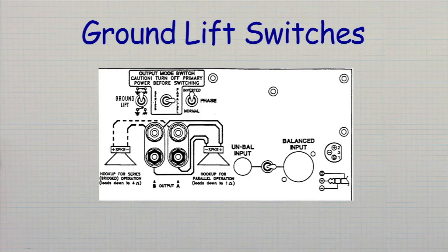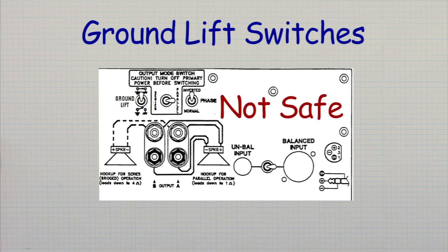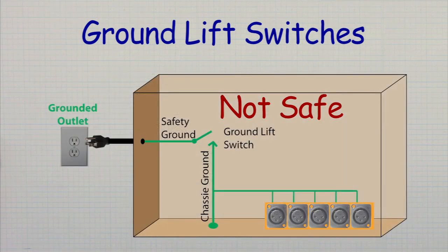Ground lift switches can be found on some professional audio equipment. These switches work in one of two ways. In the past, the ground lift switch would disconnect the safety ground, the one from the AC cord, that goes to the chassis ground, thus preventing any ground loops. But this also makes the equipment unsafe by disconnecting the safety ground.